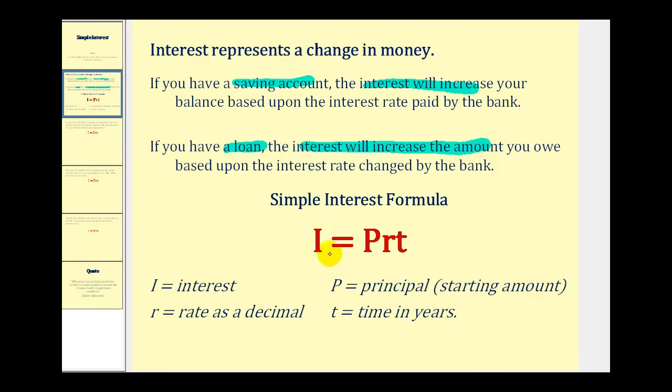The simple interest formula is I equals P times R times T. Where I is the interest, P is the principal or starting amount, R is the rate expressed as a decimal, and T is time expressed in years. Let's go and take a look at some examples.